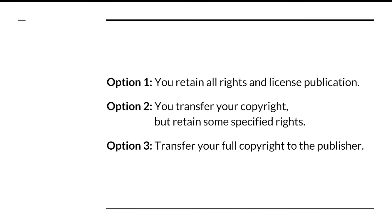As an author wanting to publish in an academic journal, you typically have three options in an agreement. Option one: you retain all rights and license publication. Option two: you transfer your copyright but retain some specified rights — this is the most common type of agreement. Option three: you transfer your full copyright to the publisher and do not retain any specified rights. We definitely want to avoid option three. Option two will be the most likely scenario, and perhaps you could negotiate the agreement further to retain more rights or a shorter embargo before you're permitted to archive your work.